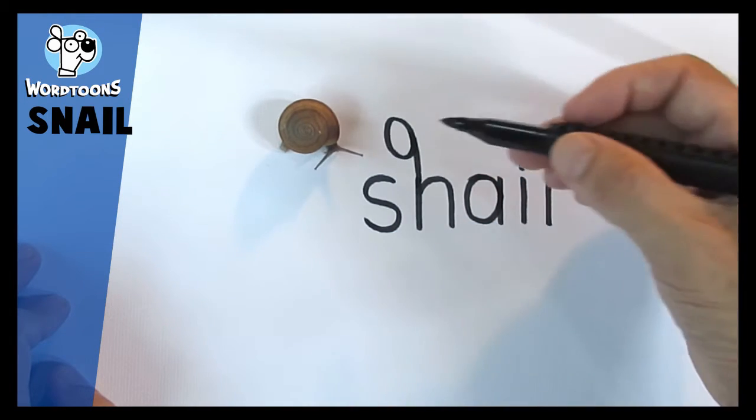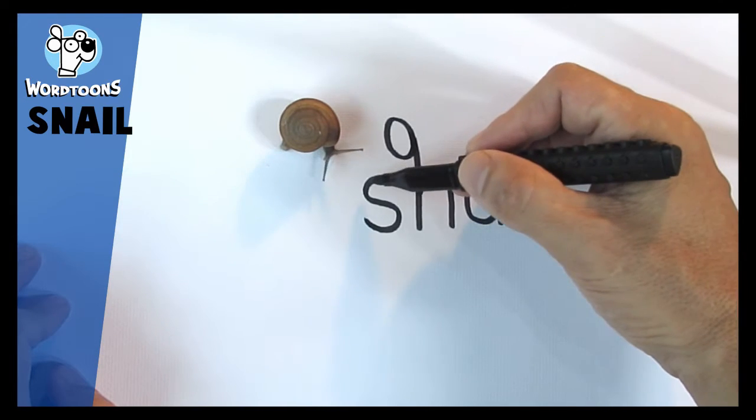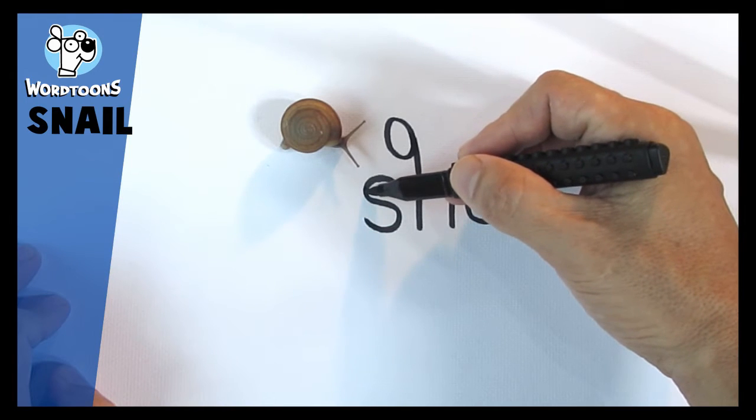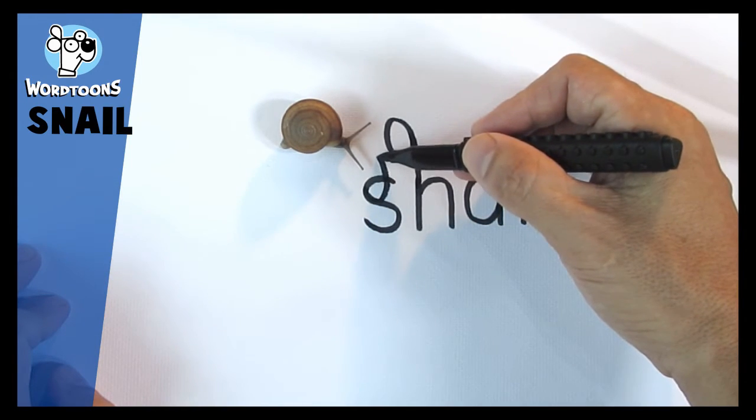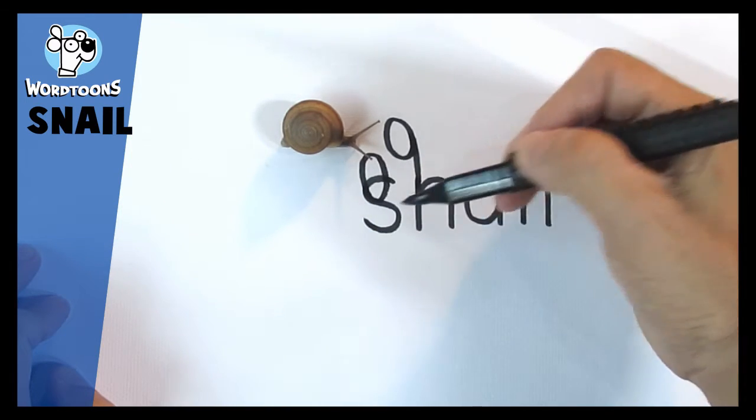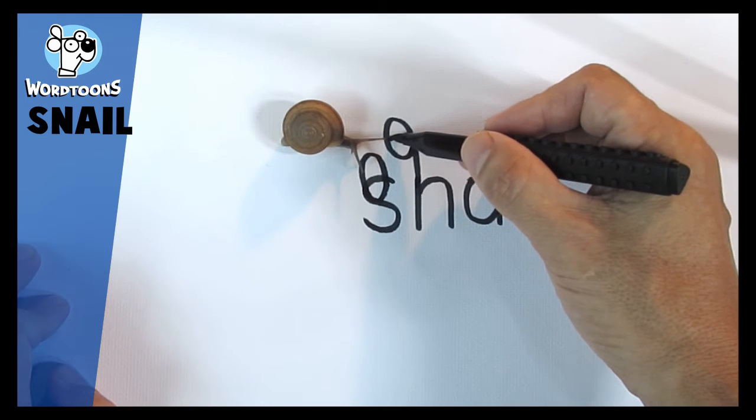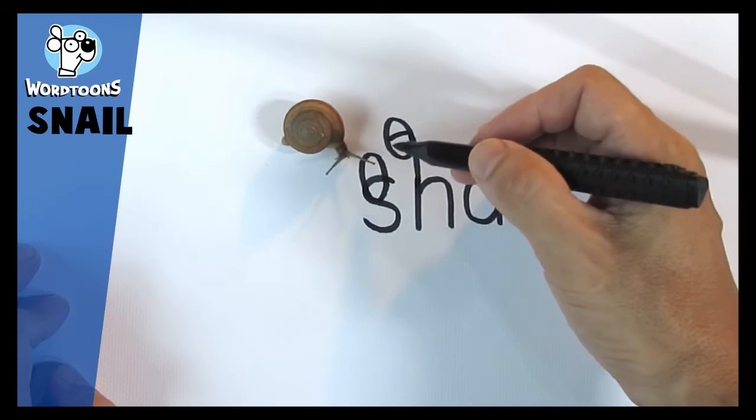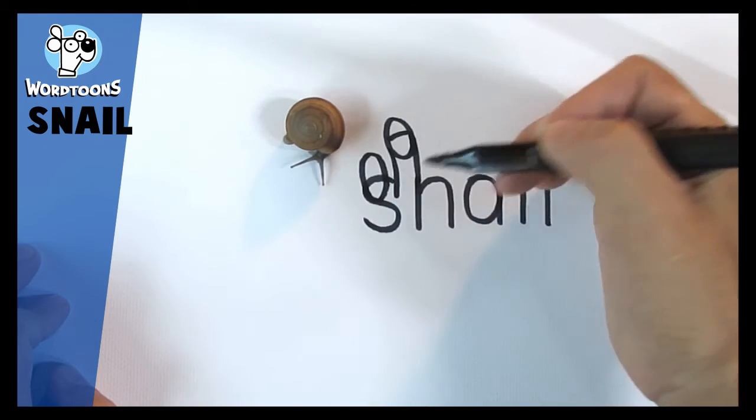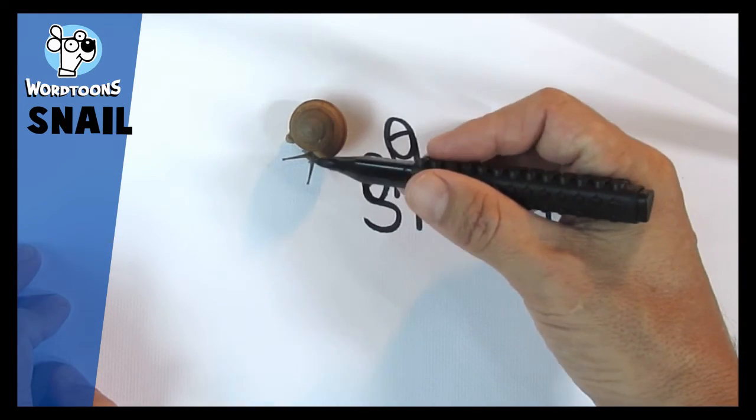Alright. And now here, watch out like that. And this part, it's going to come down here like that. So we've got two kind of bobbly eyes. See like his bobbly eyes there.